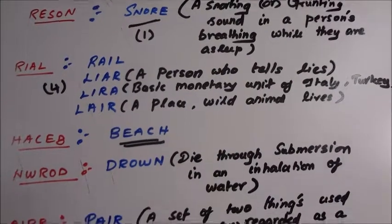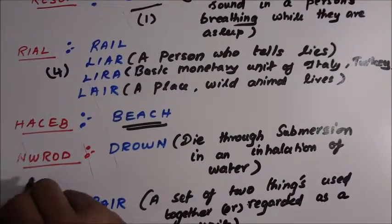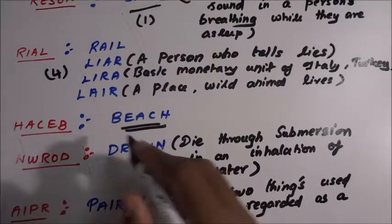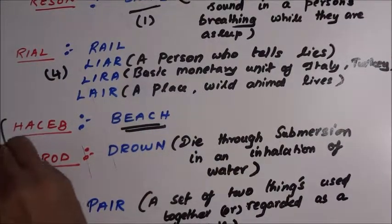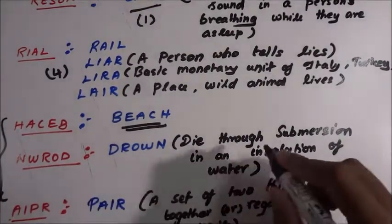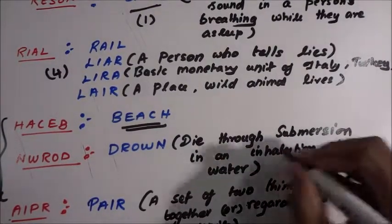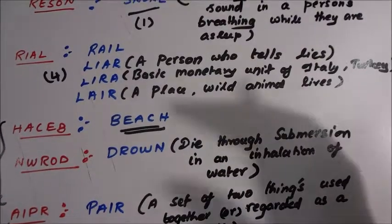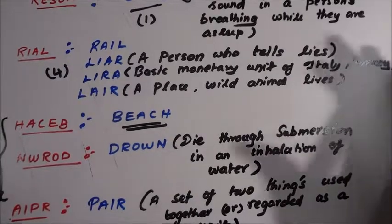N-W-R-O-D is a set of jumbled letters from which we can find one meaningful five-letter word. DROWN means to die through submersion or inhalation of water. A person who dies in water, that is drown. Only one word can be formed from this.